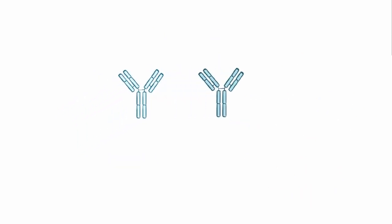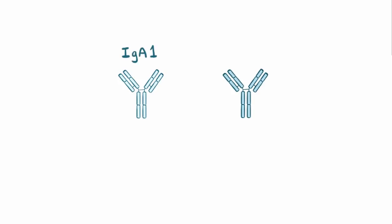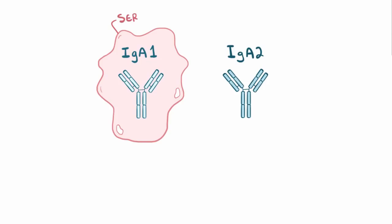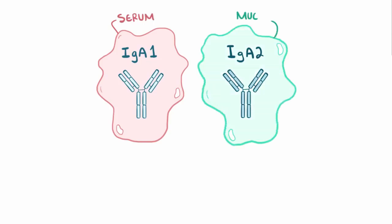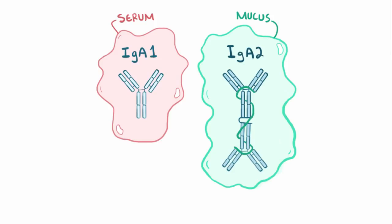Now IgA comes in two subclasses: IgA1 and IgA2. IgA1 is found mainly in the serum, while IgA2 is more often found in mucus secretions, typically in its dimeric form.